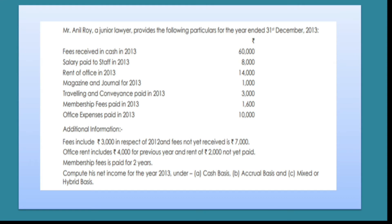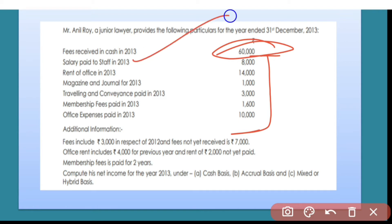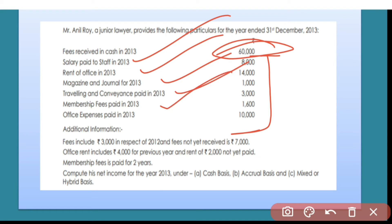Let me explain with an example. Fee received is sixty thousand — that is my income. All other items are expenses: salary paid, rent, magazines and journals, traveling, membership fee paid, office expenses, and so on. There is only one source of income, which is the fee received.